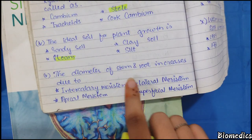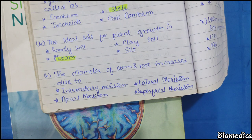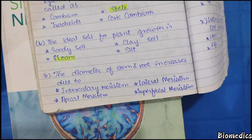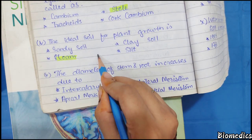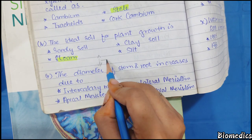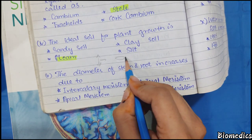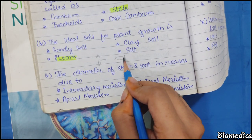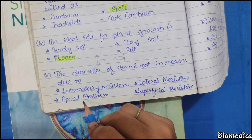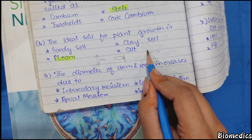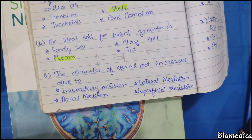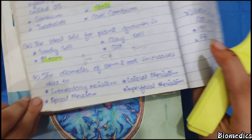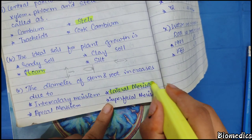The diameter of stem and root increases due to which meristem? You should remember: length increases due to apical meristem, growth at nodes is intercalary meristem, and diameter of stem or root increases due to lateral meristem. So the answer is lateral meristem, as also written in the book.